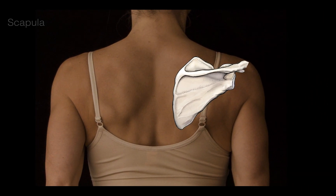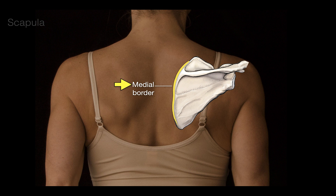What do we call this border of the scapula? Well, it's on the medial side of the bone, so let's call it the medial border of the scapula. It's also the border that is closest to the vertebral column, so we'll also call it the vertebral border.